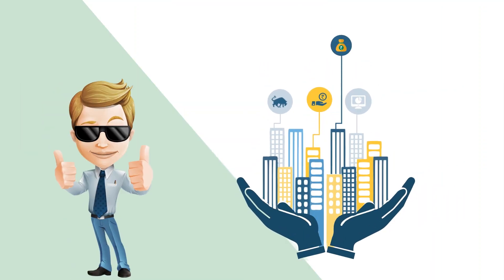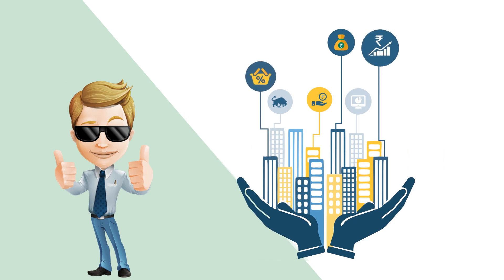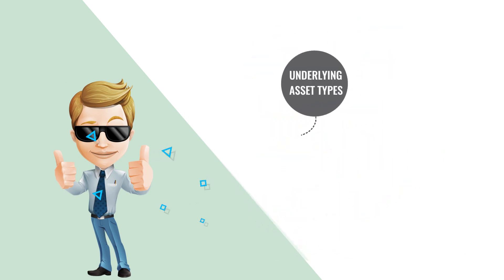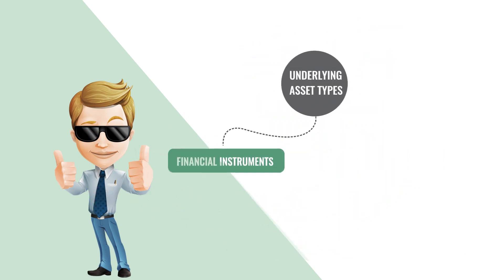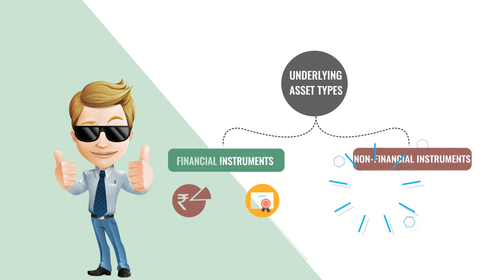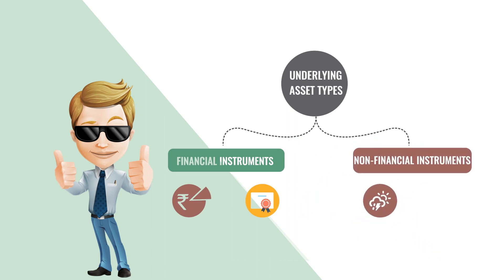The underlying could be an asset, a basket of assets, an index, or even another derivative. The underlying assets could be financial instruments like equities and bonds, or non-financial instruments like commodities or weather.